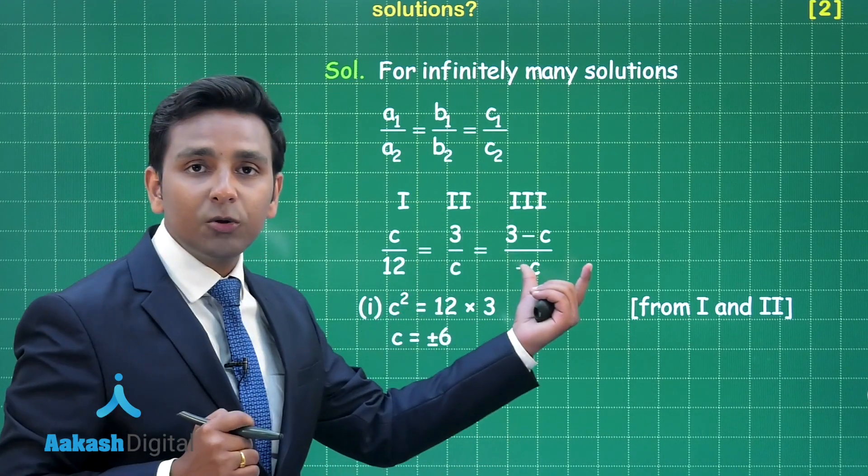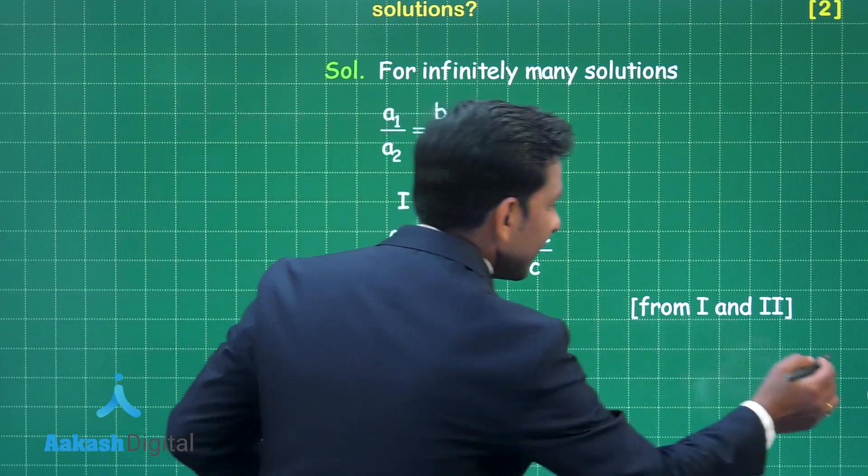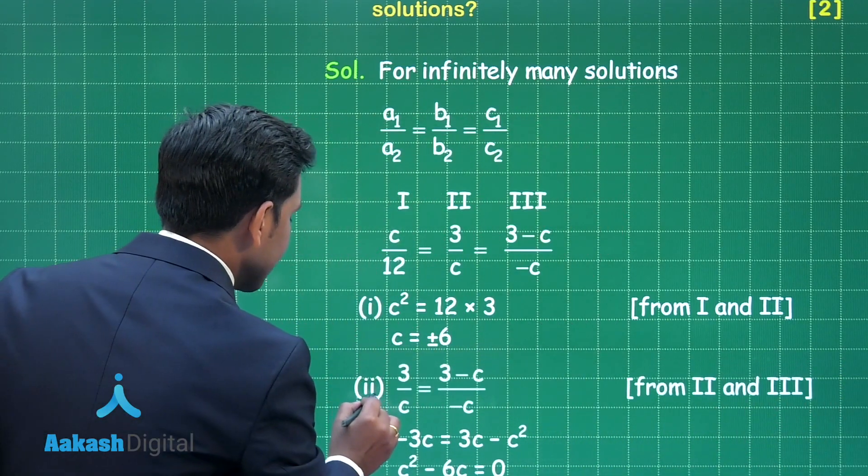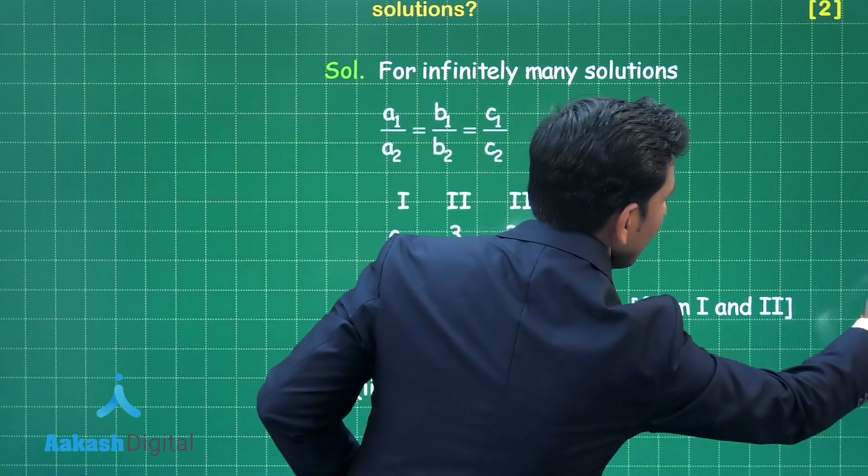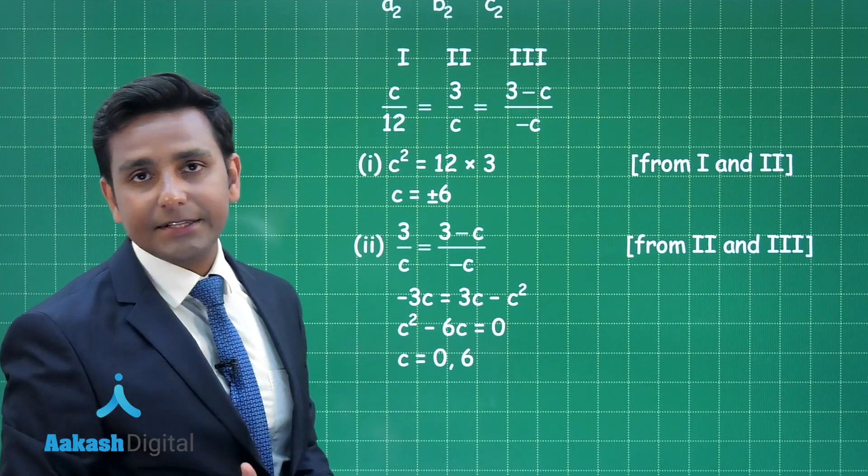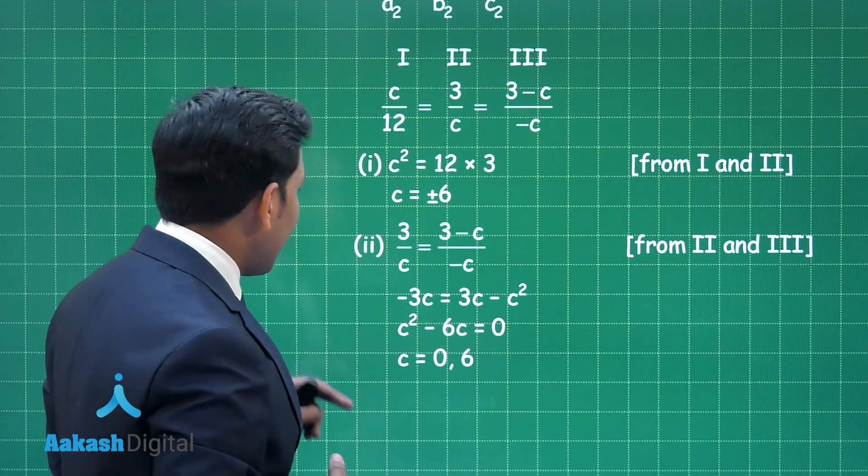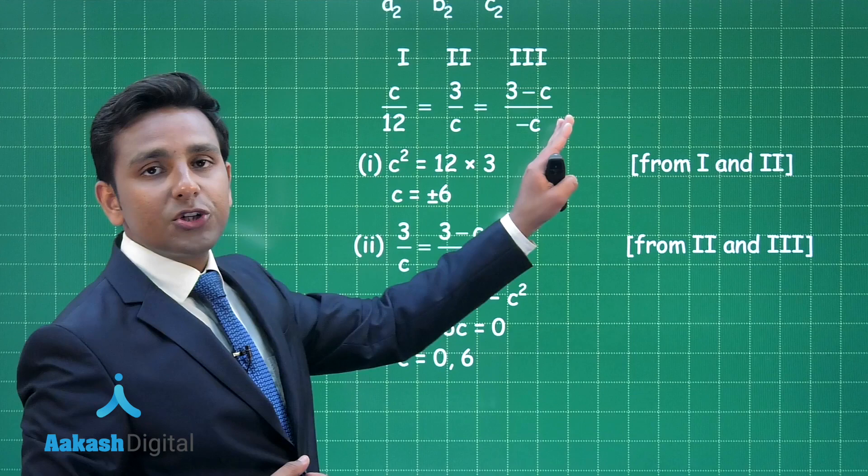Now take second and third into the consideration, then we will obtain the value of C equal to 0 or 6, clear.